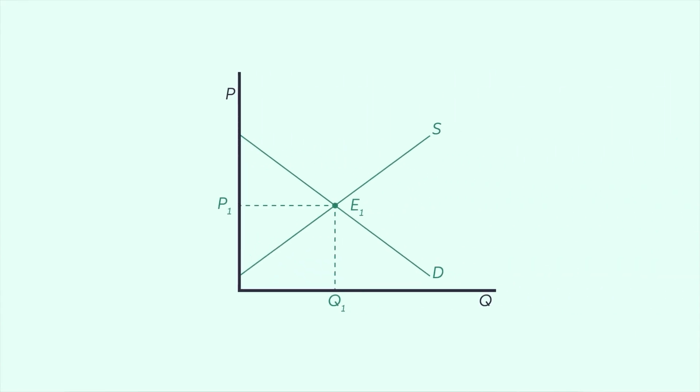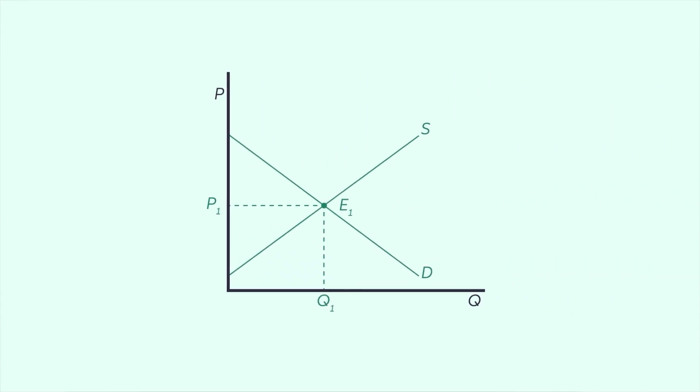Now, suppose that the market begins at equilibrium point E1 and a decrease in supply shifts the supply curve to S2. This creates a new equilibrium point E2 with a higher equilibrium price and a lower equilibrium quantity, Q2.